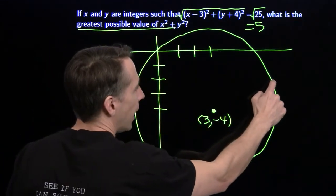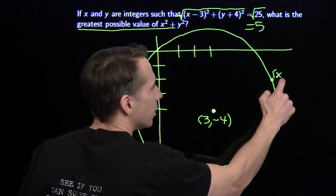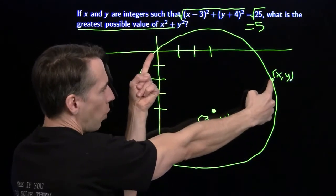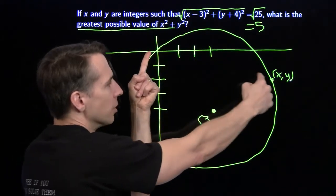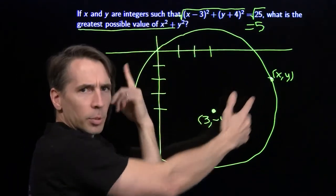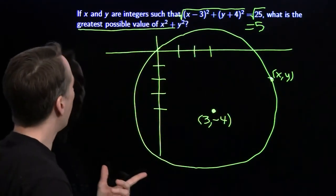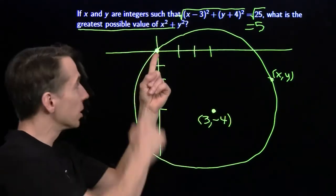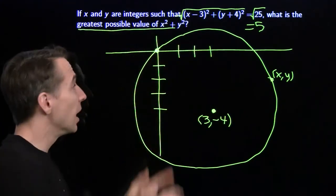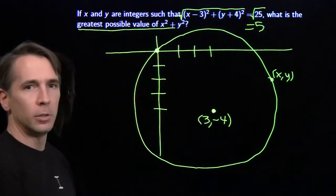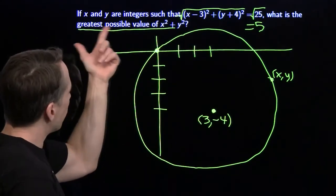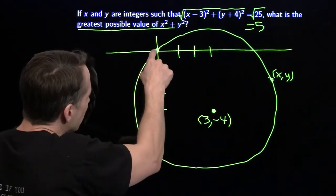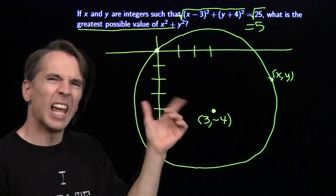Well, this is just XY out here. Let's say this is XY. X squared plus Y squared is just the square of the distance from this point to the origin. That's our X squared plus Y squared. So, we want to find the point as far as possible from the origin, because we want the greatest possible value of X squared plus Y squared. And it has to be on this circle. And its coordinates have to be integers.